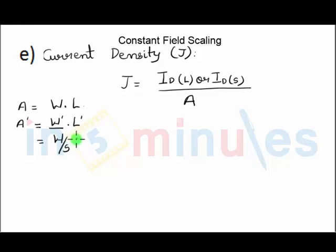We also know that after scaling, area would be W dash into L dash, which is nothing but W by S, as the width of the channel is reduced, and L by S. Since we know that W dash is W by S and L dash is L by S, A dash is nothing but original area upon S squared.